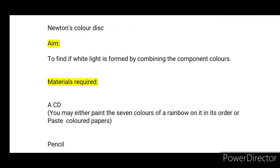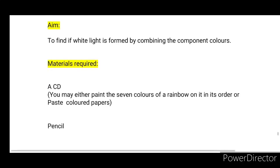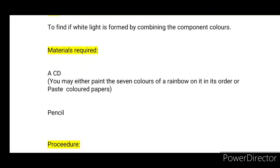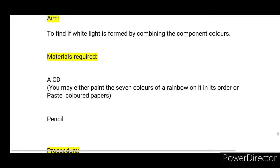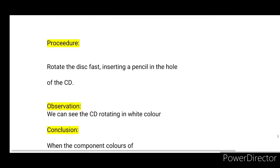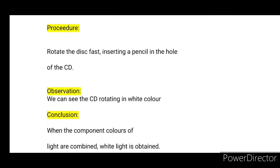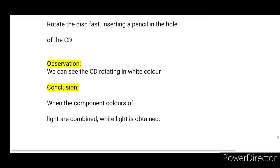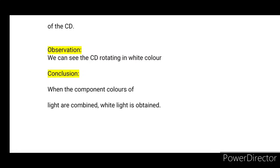Newton's Color Disc Experiment: Aim — to find if white light is formed by combining the component colors. Materials required: a CD. Paint the 7 colors of the rainbow on it in order, or paste colored papers. Procedure: Rotate the disc by inserting a pencil in the hole of the CD. Observation: We can see the CD rotating appears white in color.